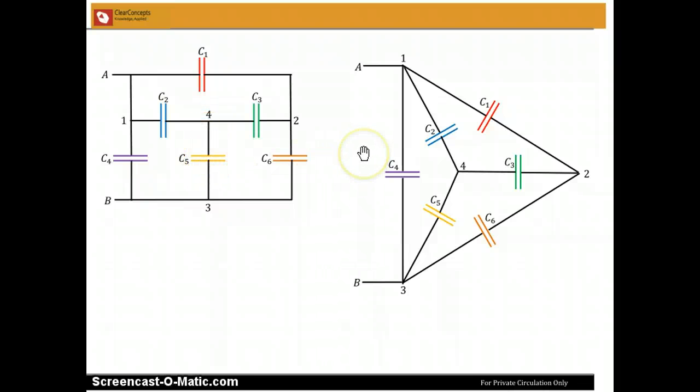And you can see that they can be rearranged as on the circuit to the right. Between A and B there is C4, which is exactly what this says. Between junctions 1 and 4 is C2. Between junctions 1 and 2 is C1. Between junctions 4 and 2 is C3. Between junctions 4 and 3 is C5. Between junctions 2 and 3 is C6. And so you can see that we have changed the way the circuit looks.